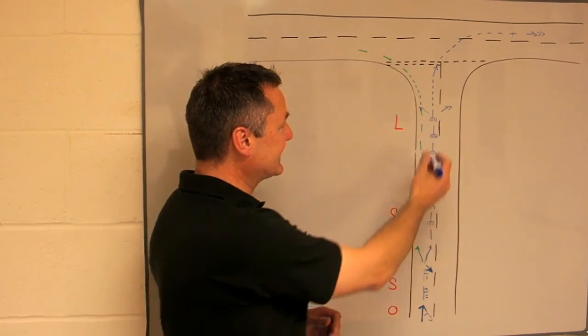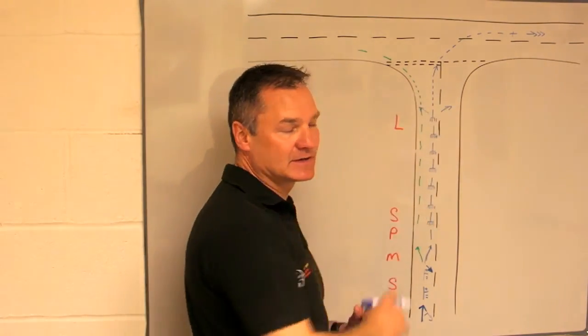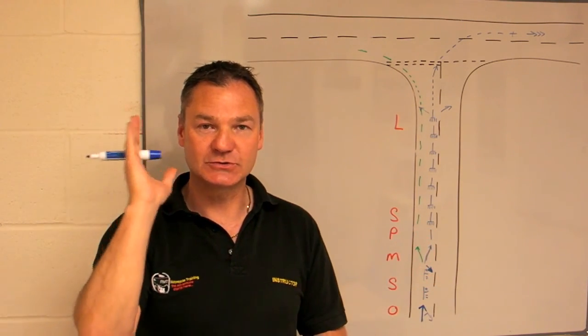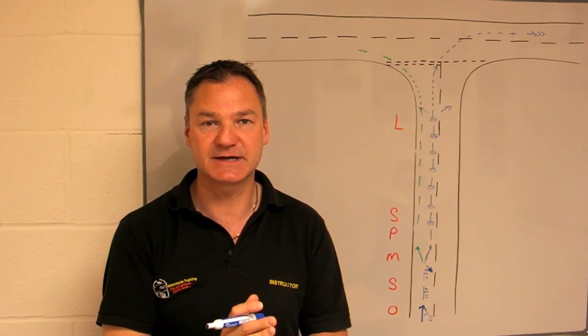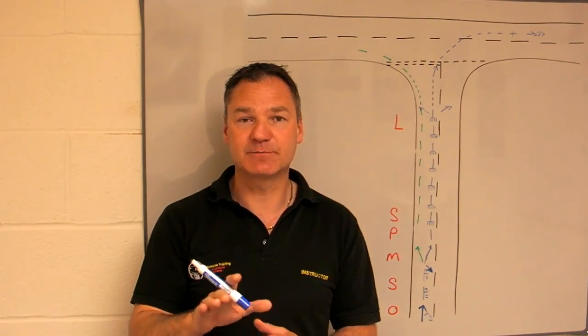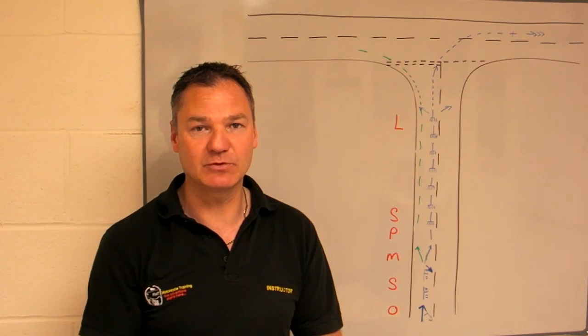The other thing that might happen is when we get to here, we decide that the junction isn't clear. So we don't bother looking either side anymore. We just look forward, keep the bike nice and stable, and concentrate on stopping the bike behind the line and also getting the bike into first gear ready to pull away.